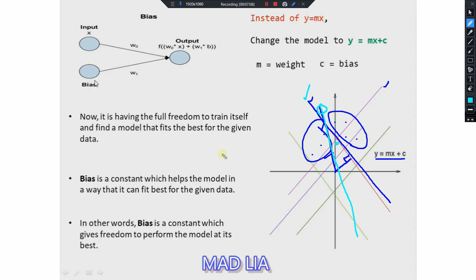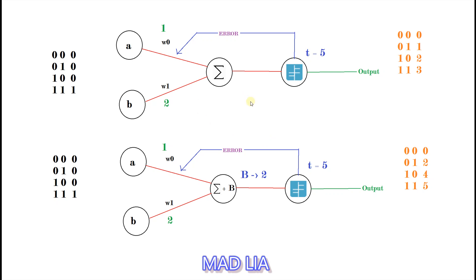So, bias is a constant which helps the model fit best to the given data. In other words, bias is a constant which gives the model the freedom to perform at its best. Now let's see one example — we already know the AND gate perceptron.